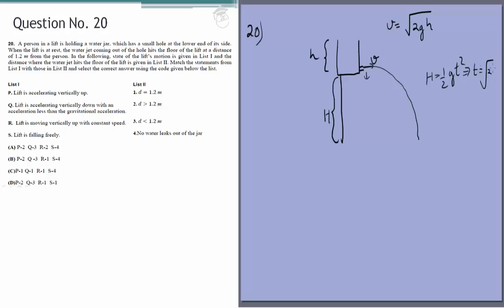And this is the speed, so the horizontal distance covered will be vt, which is root 2gh into root 2 capital H by g. And g and g cancel, and we get root of 4h capital H.